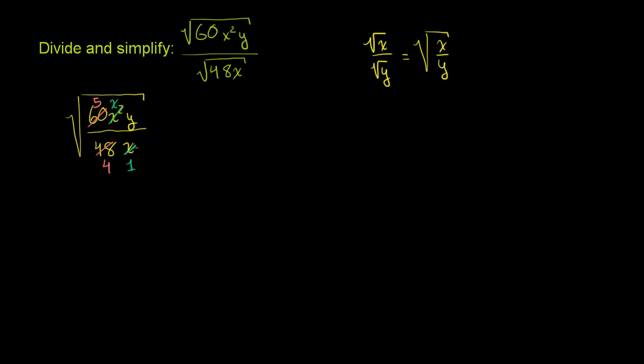So if we wanted to simplify this, this becomes, this is equal to, make a radical sign, and then we have 5/4. We can write it a slightly different way, but I'll write it this way. 5/4, and we have nothing left in the denominator other than that 4, and in the numerator we have an x and we have a y.